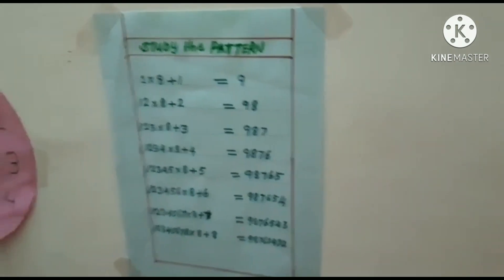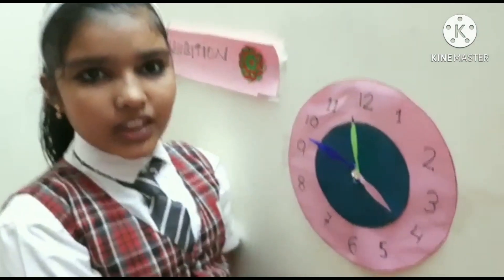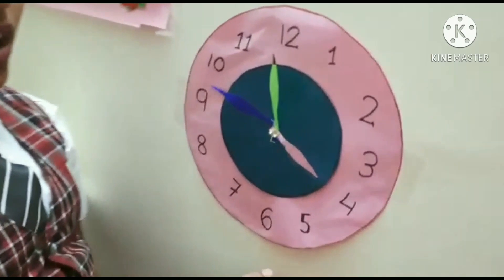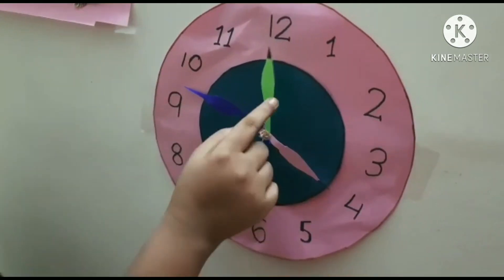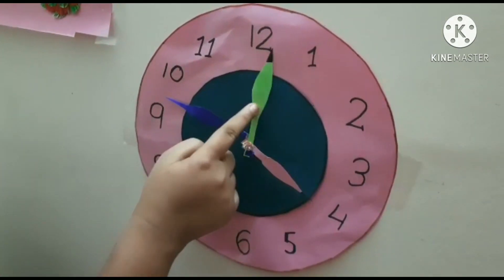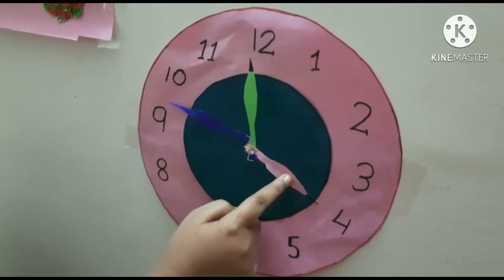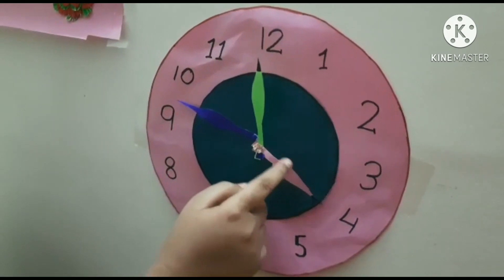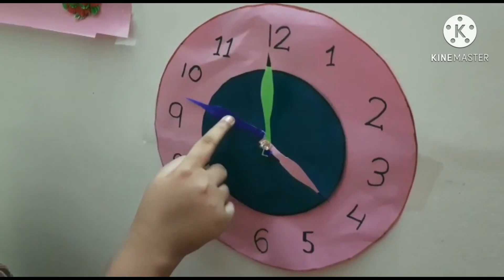Let me introduce you to the working model of a clock. The time is 4 o'clock. The needle names are the hour needle, minute needle and second needle.